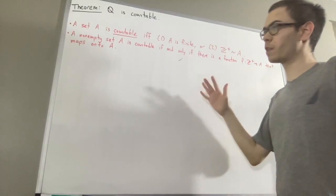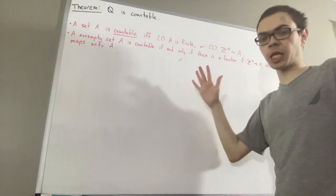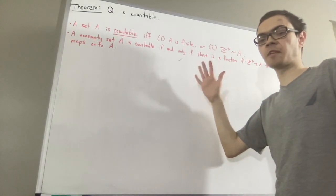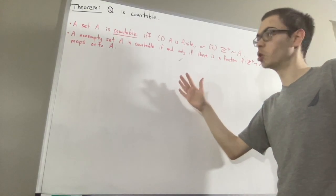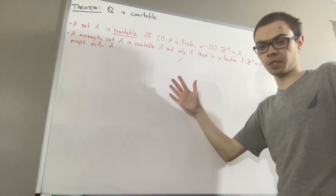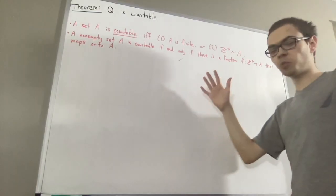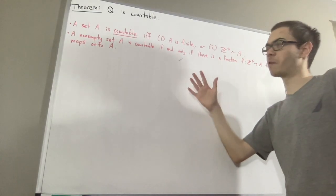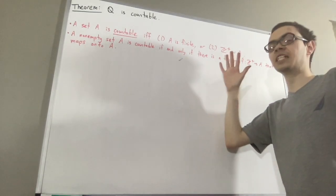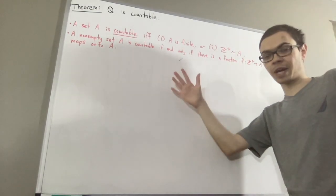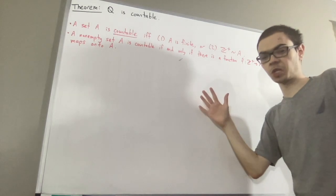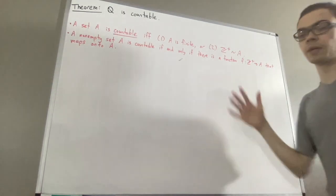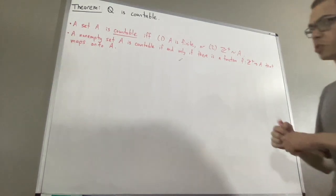We have proven that there is a bijection from the set of positive integers to the integers. We've also proven that there is a bijection from the set of ordered pairs of positive integers to the set of positive integers.